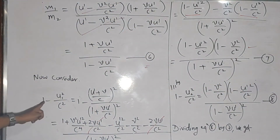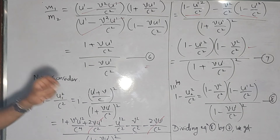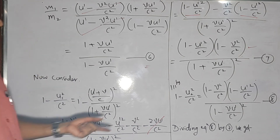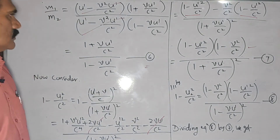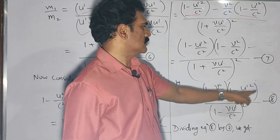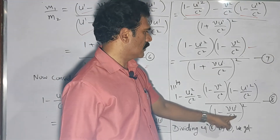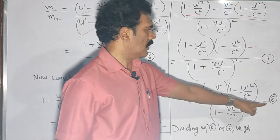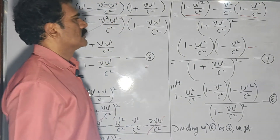Similarly, for body B we derive (1 - U2²/C²). Using the equation for U2 (with -V in place of +V), the numerator is unchanged: (1 - V²/C²)(1 - U'²/C²), but the denominator becomes (1 - VU'/C²)². This is equation 8 — the only difference from equation 7 is the sign in the denominator.